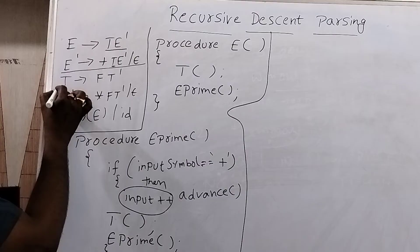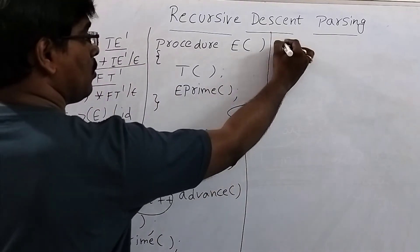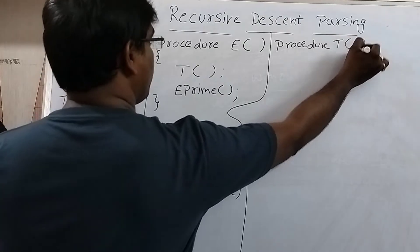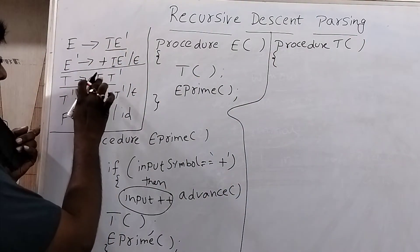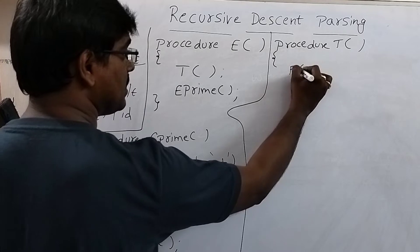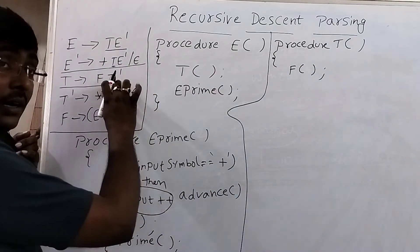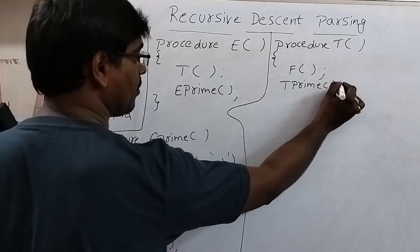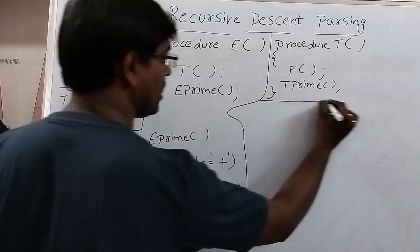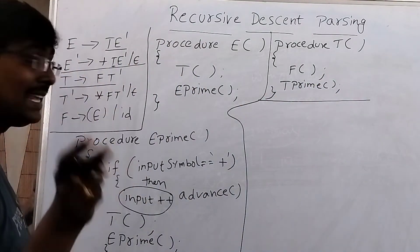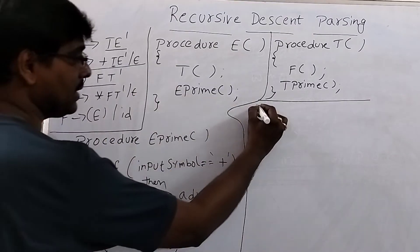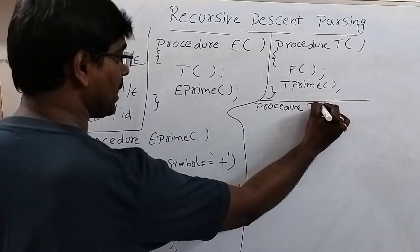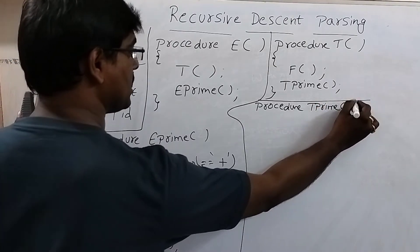Now write the procedure for T(). In procedure T(), first call F(), and then call T_prime(). Procedure T is now completed. Now write procedure T'() — T_prime(). T-dash is represented as T_prime.